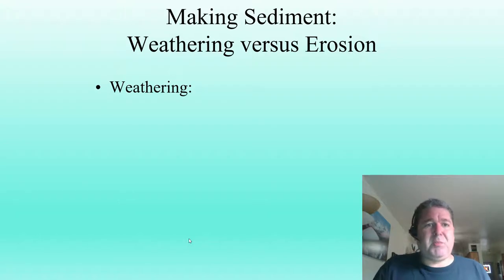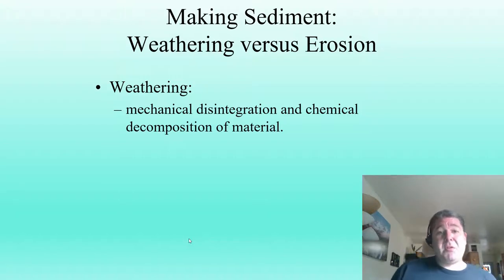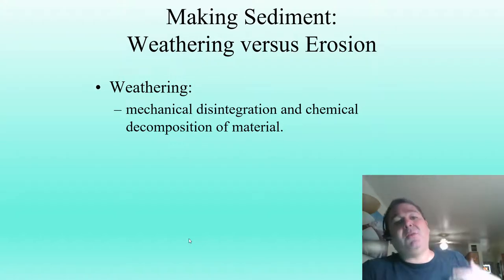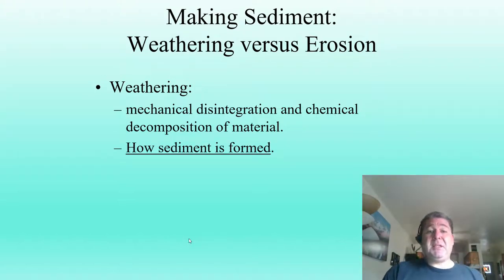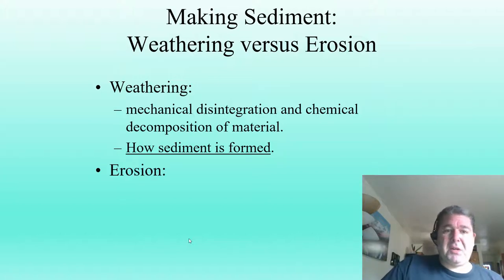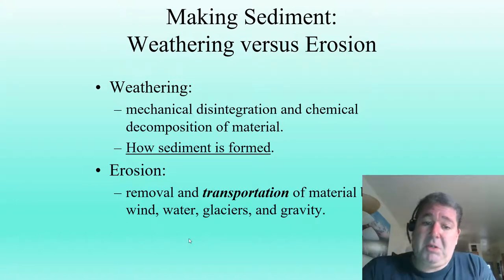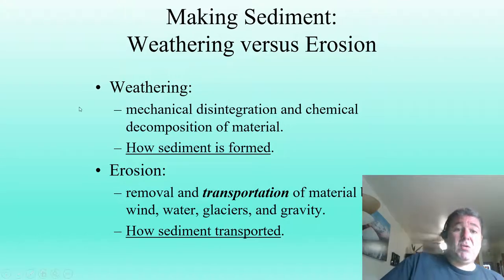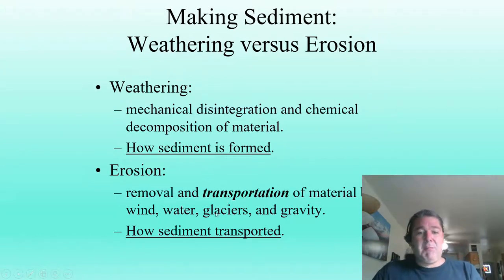An important distinction we must make is between weathering and erosion. Weathering is the mechanical and/or chemical disintegration or decomposition of material in place — when it breaks down, either physically or chemically, in place. That is weathering; that is how we form sediment. Erosion, on the other hand, is when this weathered material is then removed or transported by wind, water, glaciers, gravity, and so on. Erosion is how sediment is transported — weathering is basically the rotting of the rock in place; erosion is the removal of that rock from its original home, bringing it elsewhere.